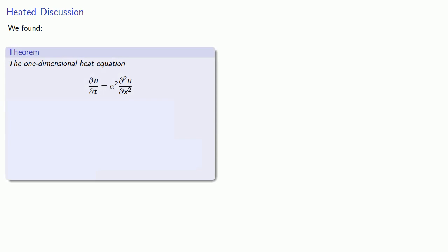Earlier we found that the one-dimensional heat equation has a solution that can be written as a series where our g functions are exponentials and our f functions are trigonometric or exponential functions depending on the value of lambda for every lambda in some set capital lambda.